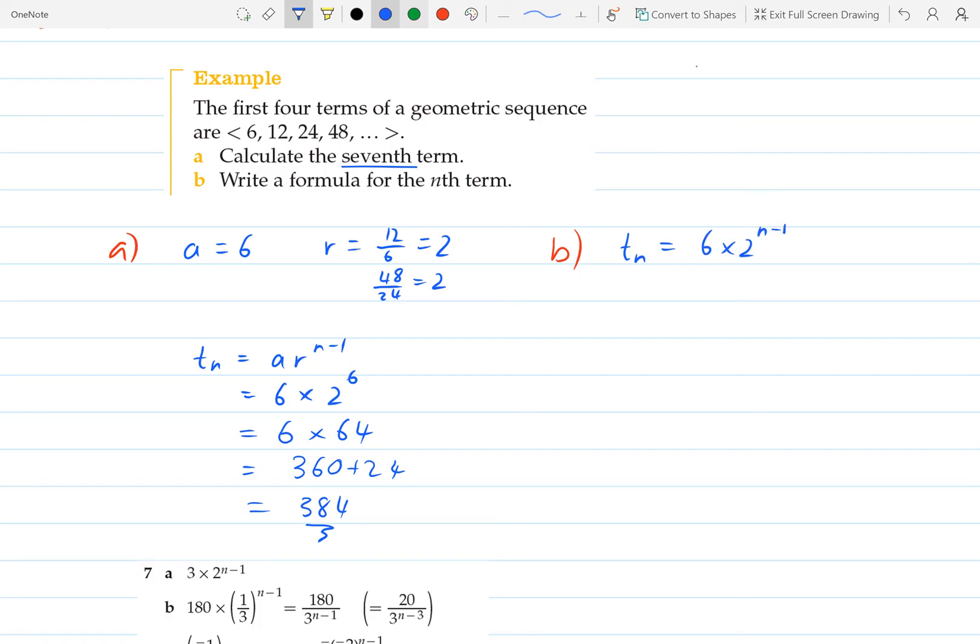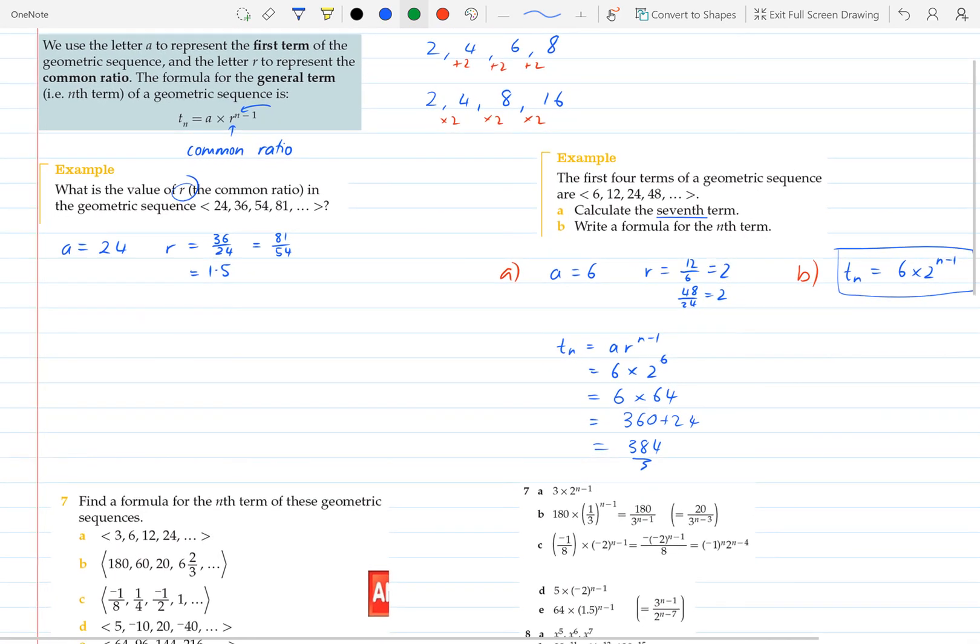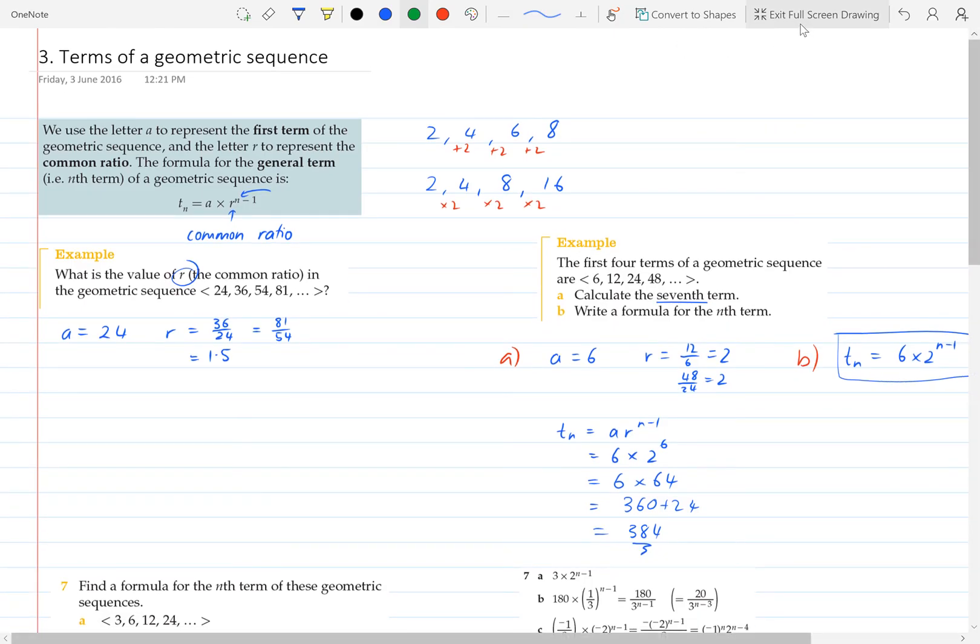Okay, so that's our answer for question A. With question B, it's asking us to write a formula for the nth term. All that's asking us is to write the Tn formula, and that's going to be 6 times 2 to the power of n minus 1. So it's just asking us to write that formula in terms of n.